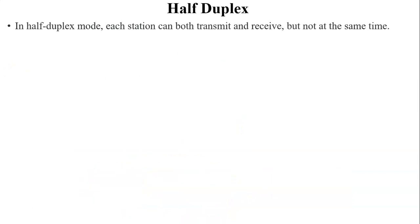Next, half duplex mode. In this mode, each station can both transmit and receive data, but not at the same time. For example, two PCs communicating through half duplex mode: user A can send data and user B will receive it. When user A is the sender, B cannot send data — only receive. When B is the sender, user A can only receive data.